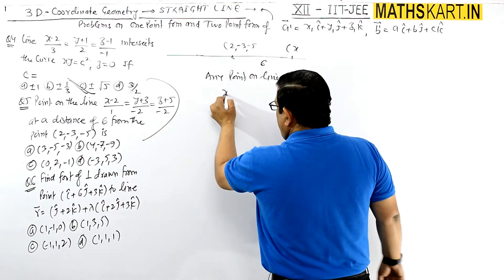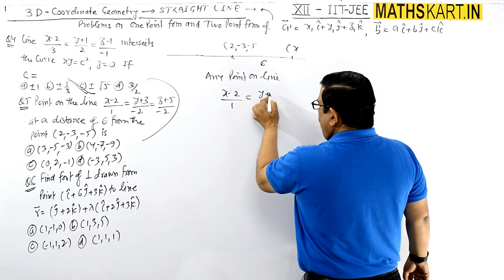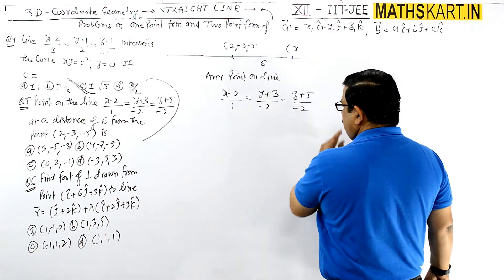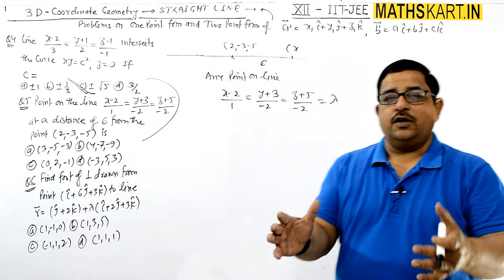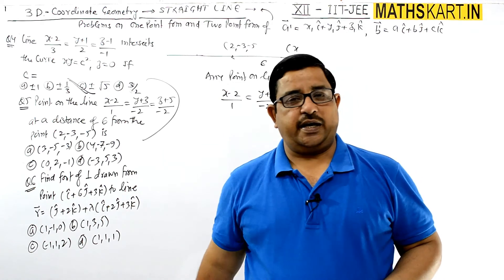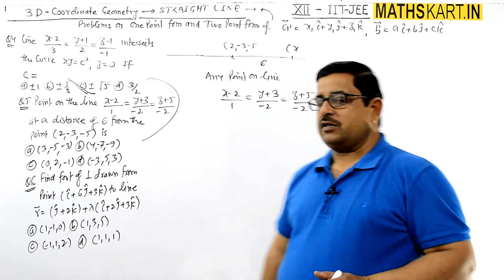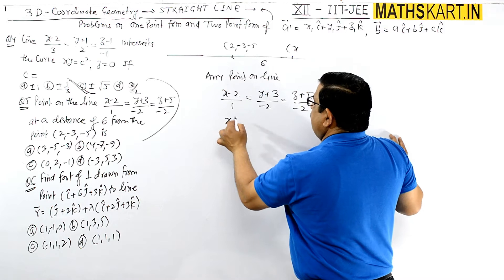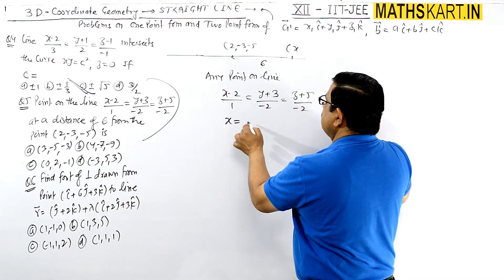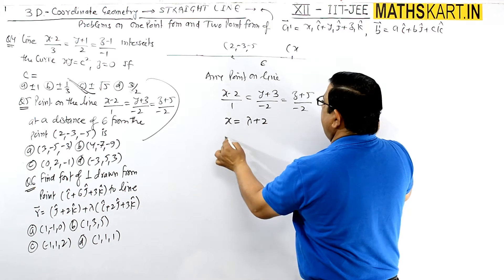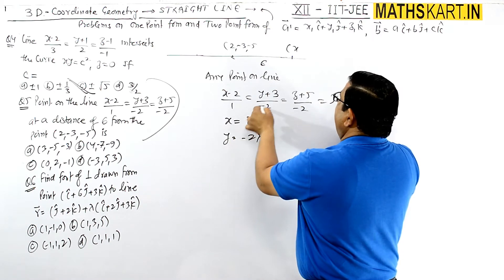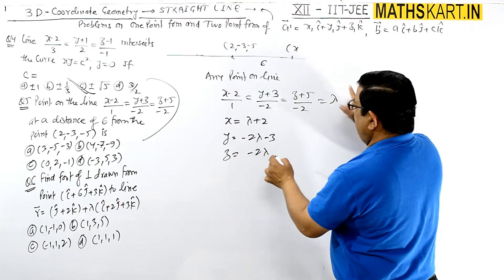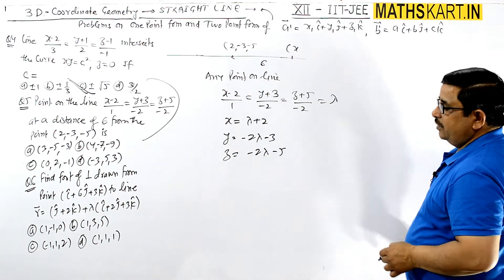Any point on the line satisfies: x minus 2 by 1 equals y plus 3 by minus 2 equals z plus 5 by minus 2 equals lambda. So the general point on the line is: x coordinate = lambda plus 2, y coordinate = minus 2 lambda minus 3, z coordinate = minus 2 lambda minus 5. This is the general point on the line.